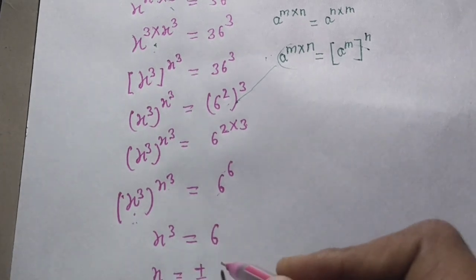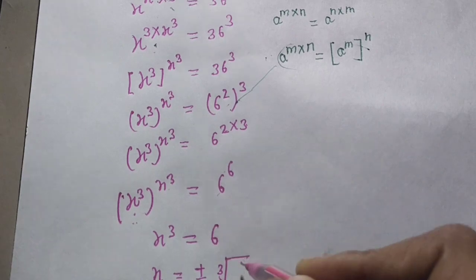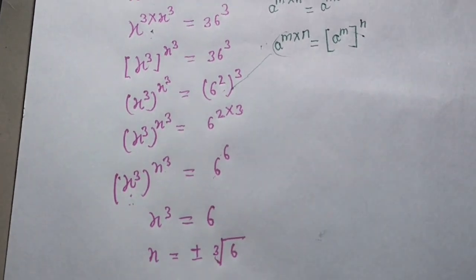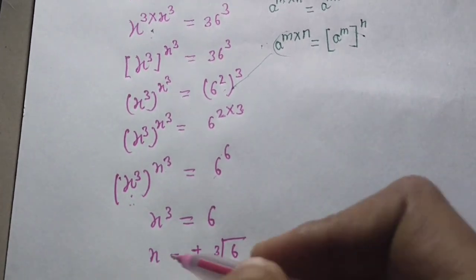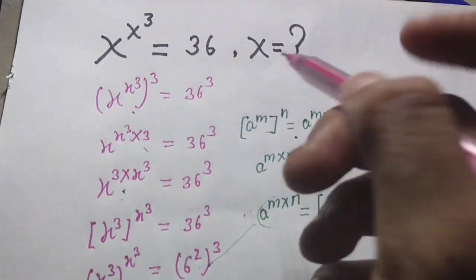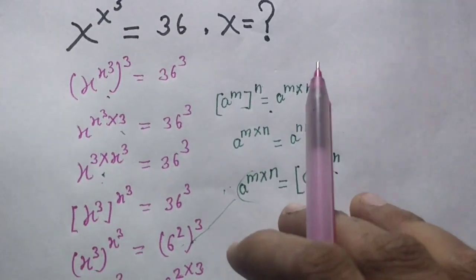So base and power are the same, so x equals 6 as the final answer.